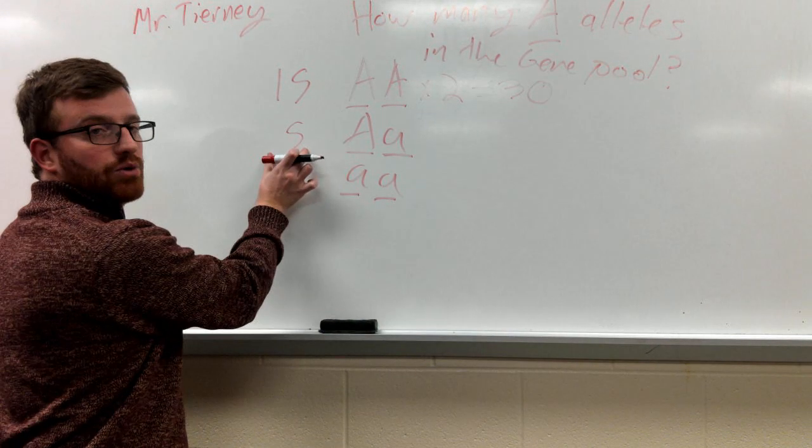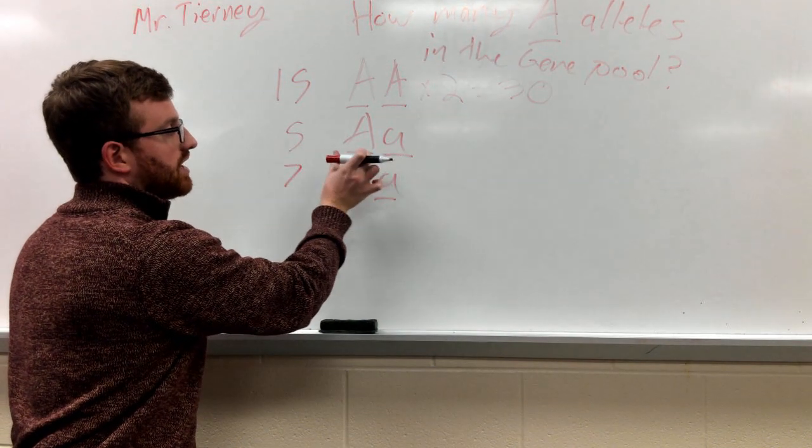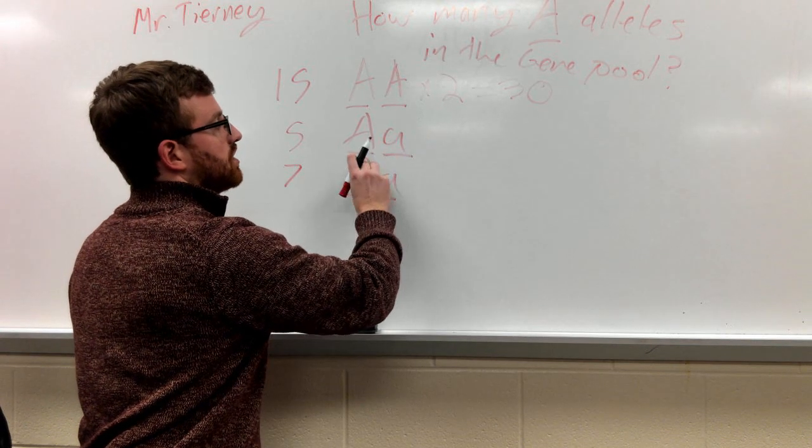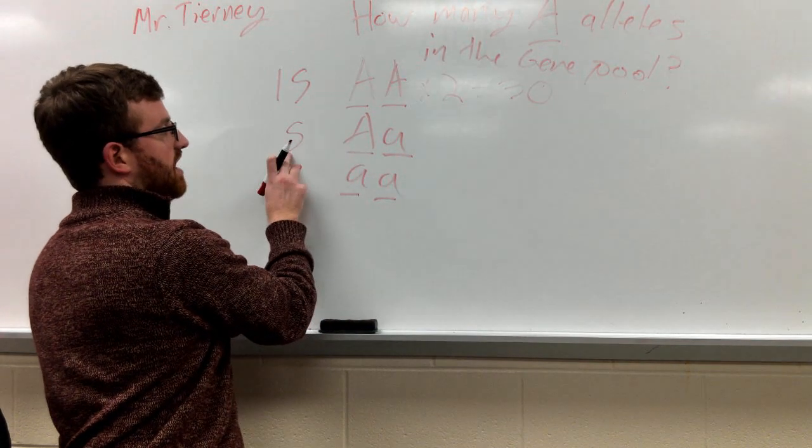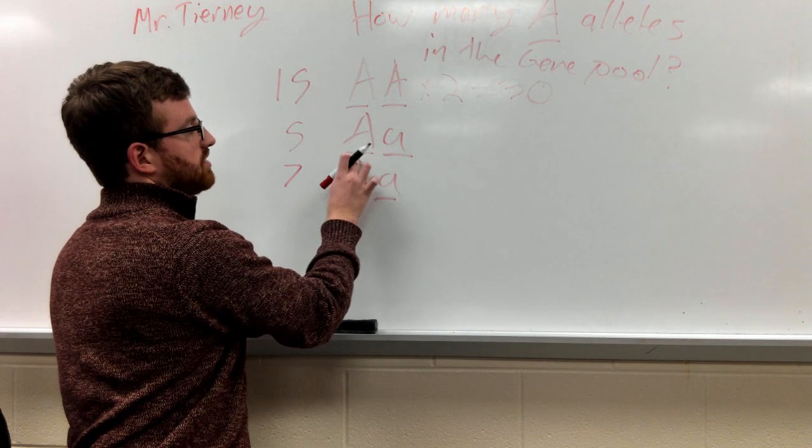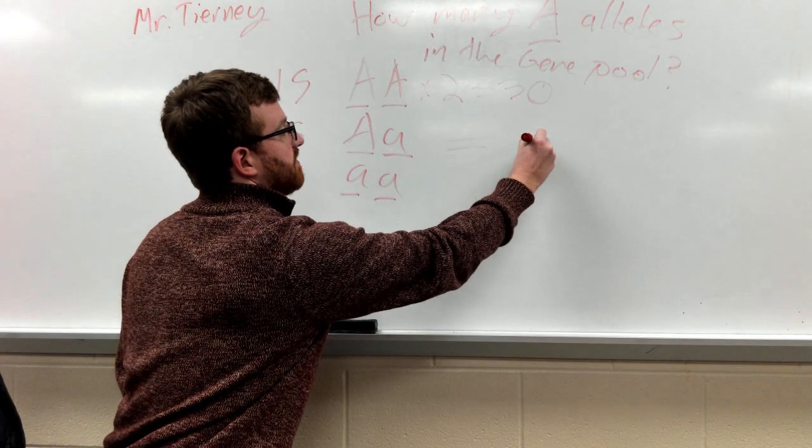Here we have 5 organisms that have big A, little A. We're only focusing on the big A, so we're not going to multiply that by anything because 5 organisms have one big A. So 5 times 1, that's going to be 5.